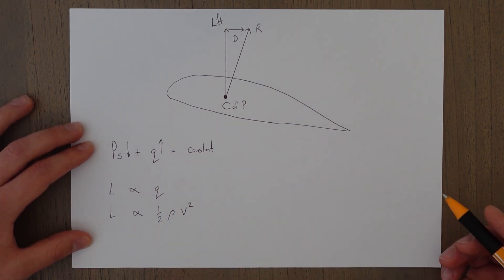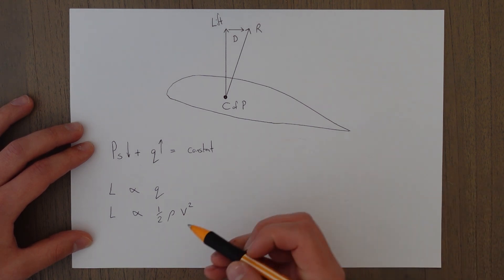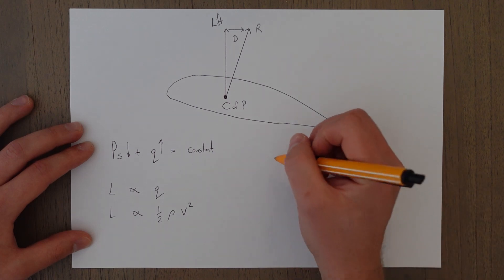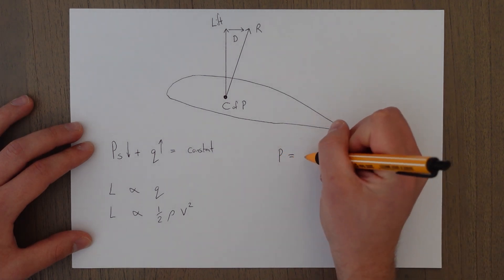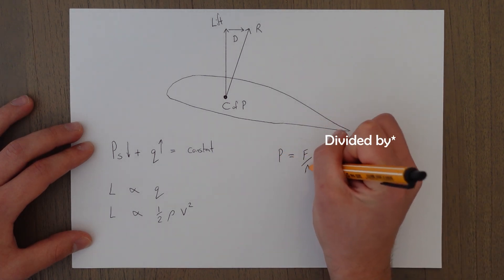The lift force is also dependent on the area of our wing. The thing that generates the reaction force is actually the pressure differential, and pressure equals force times area.